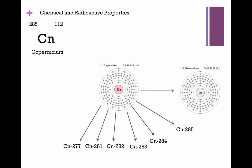There are six known radioisotopes and two possible isomers of Copernicium: Copernicium 277, 281, 282, 283, 284, and 285.